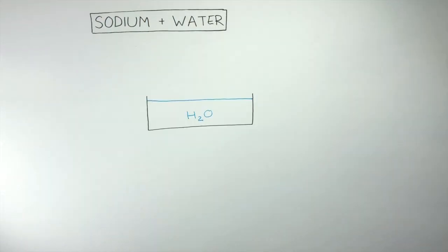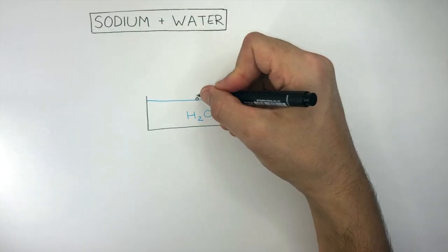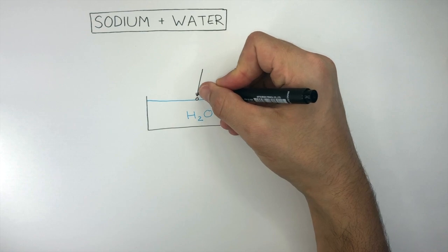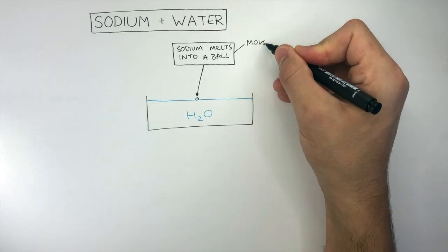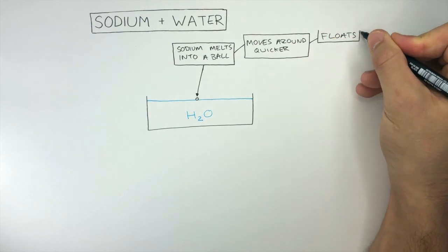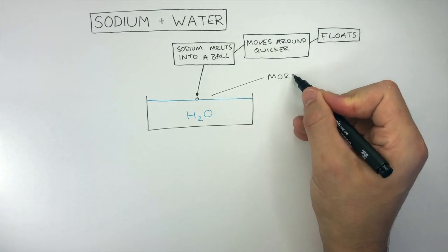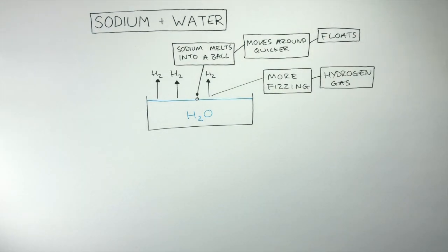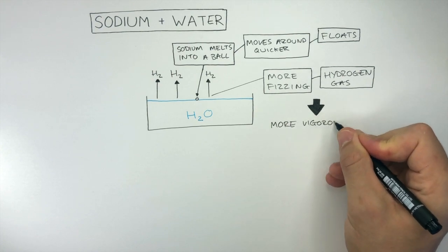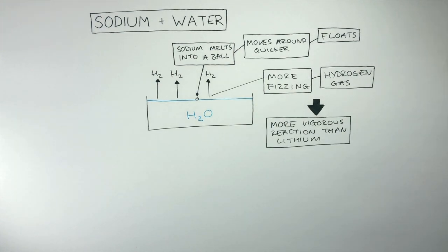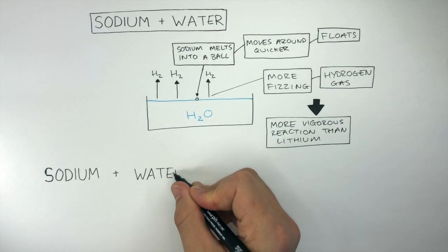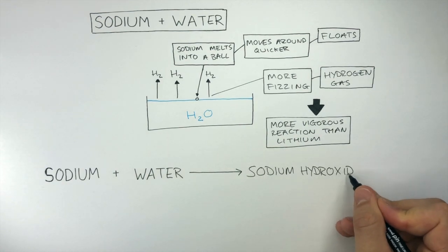Sodium reacting with water is a more vigorous reaction compared to lithium. We can see this because when sodium is dropped into water, it melts into a ball and it moves quicker on the surface where it floats due to its low density. There is more fizzing due to hydrogen gas being given off at a faster rate. These observations show us sodium reacting with water is a more vigorous reaction than lithium and water.